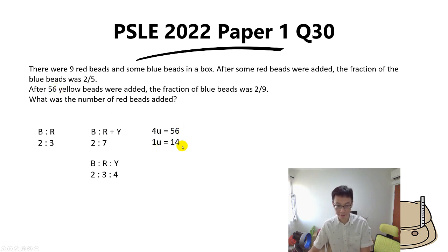One unit equals 14. So to find the number of red beads, you take 14 times 3, you get 42. But is that the answer? No, because you still have to minus the 9 beads at first, because the question asked for number of red beads added. So 42 minus 9, the answer is 33 beads.